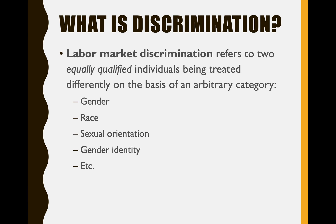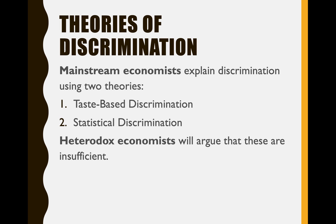So what is discrimination before we think about different economic theories of discrimination? Labor market discrimination refers to equally qualified individuals being treated differently on the basis of an arbitrary category. We're largely going to be talking about gender discrimination in the labor market, but you could also imagine discrimination based on race, sexual orientation, gender identity, ethnicity, age — all kinds of different things.